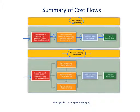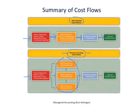We have separate work in process inventory accounts for each production department, as shown here. Then as products are completed, they go through those series of departments, and the costs for those completed products go into finished goods inventory. Similar to job costing, as we sell those products, those costs go to cost of goods sold.